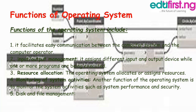Functions of operating system include: Number 1, it facilitates easy communication between the computer system and the computer operator. Number 2, input and output management — it assigns different input and output devices while one or more programs are being executed. Number 3, resource allocation — the operating system allocates and assigns resources.